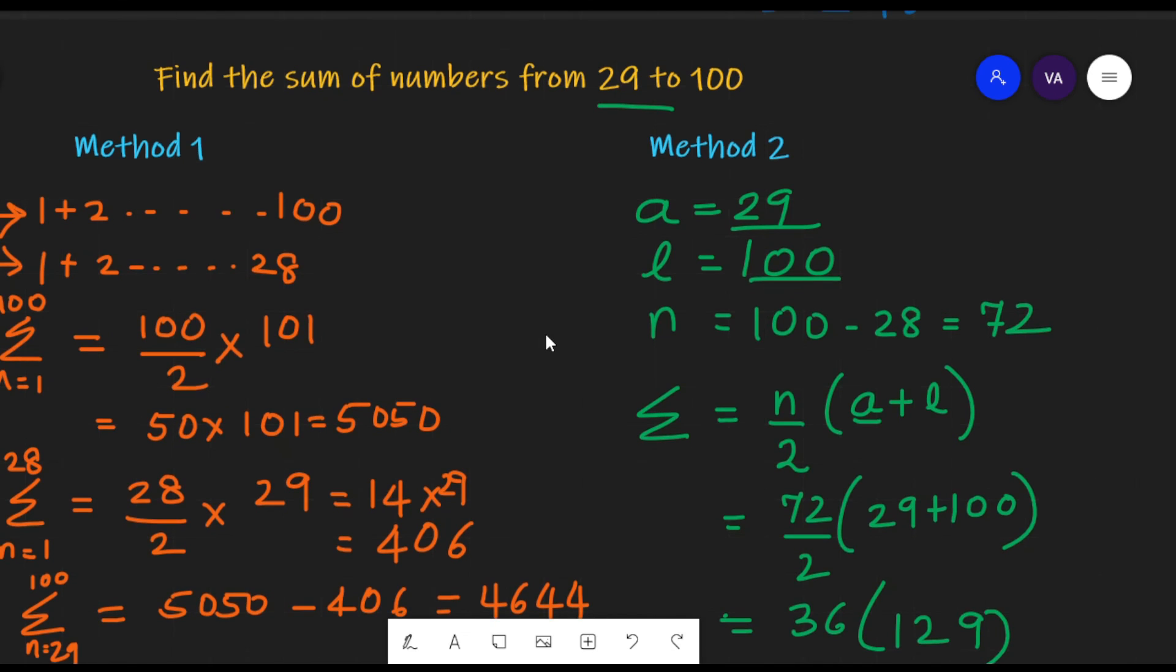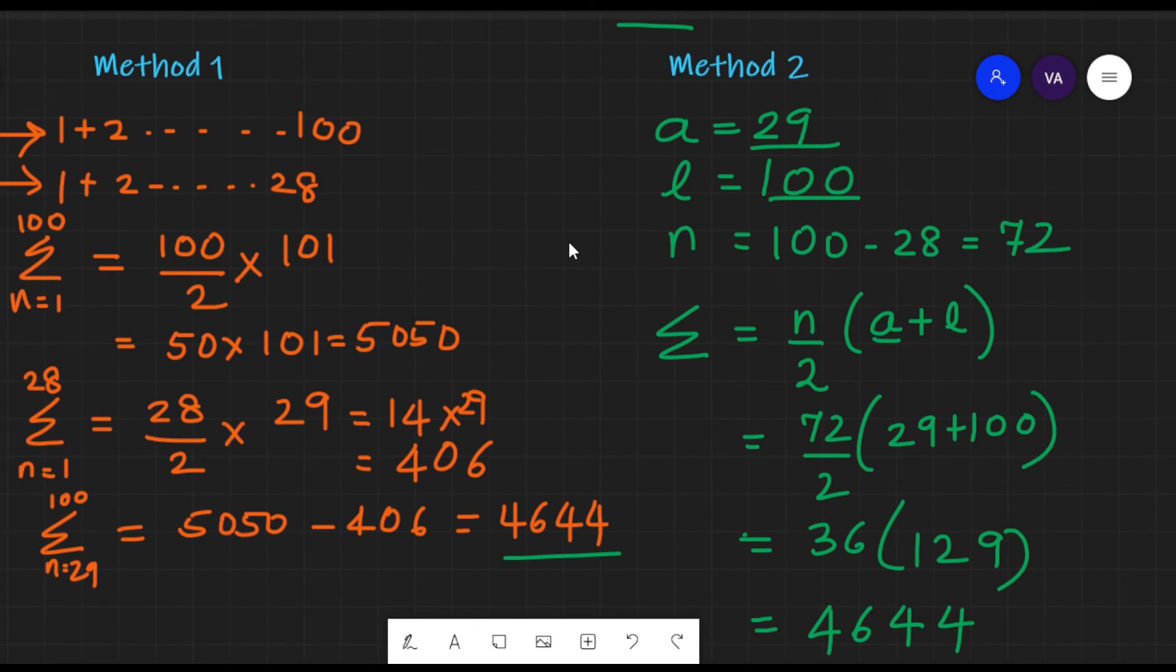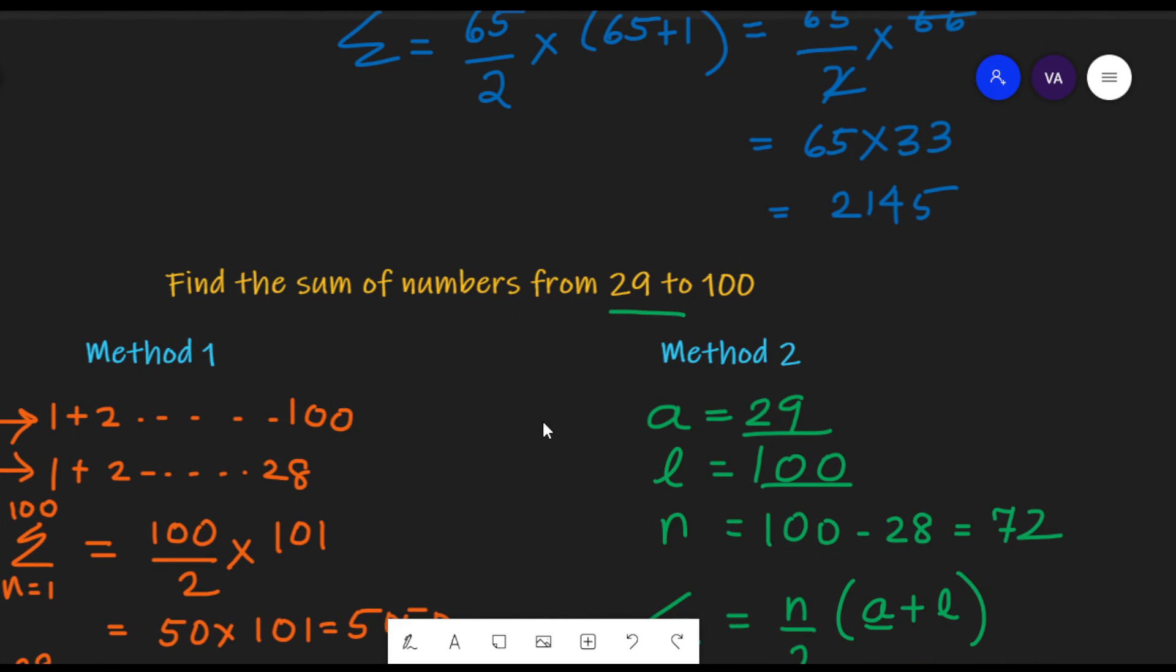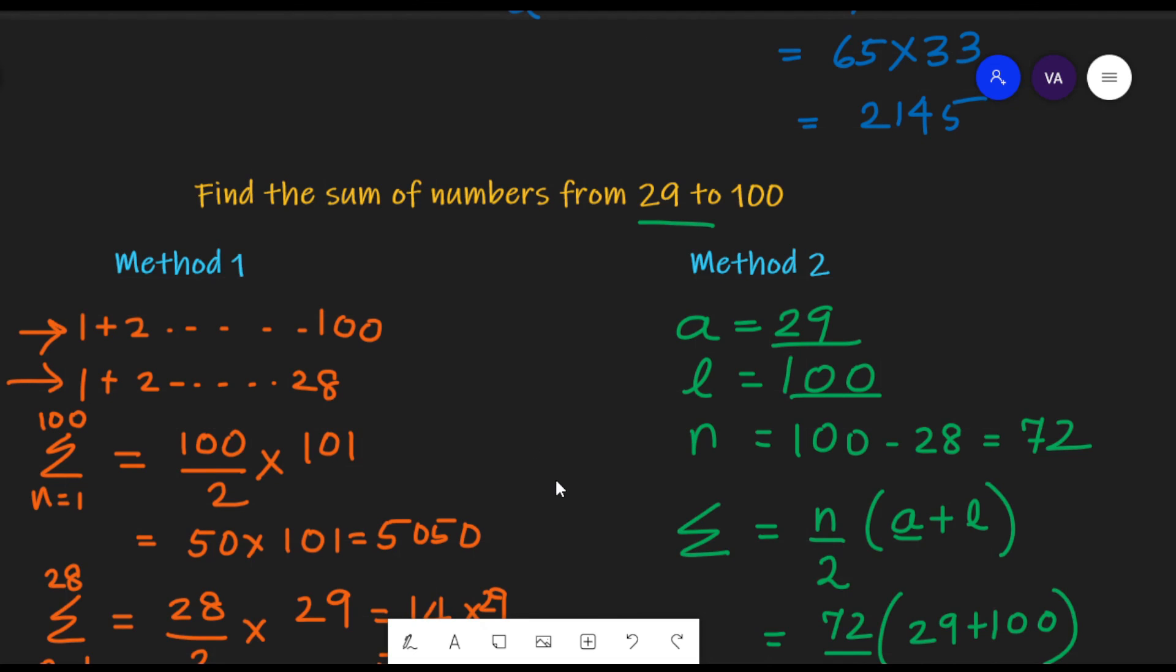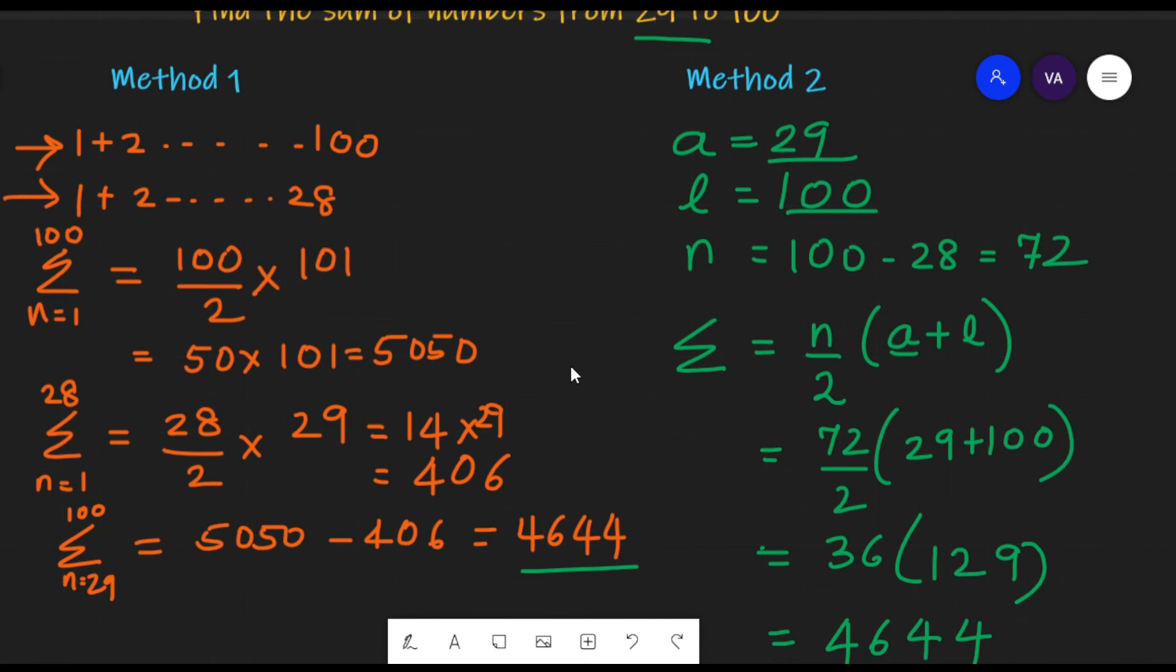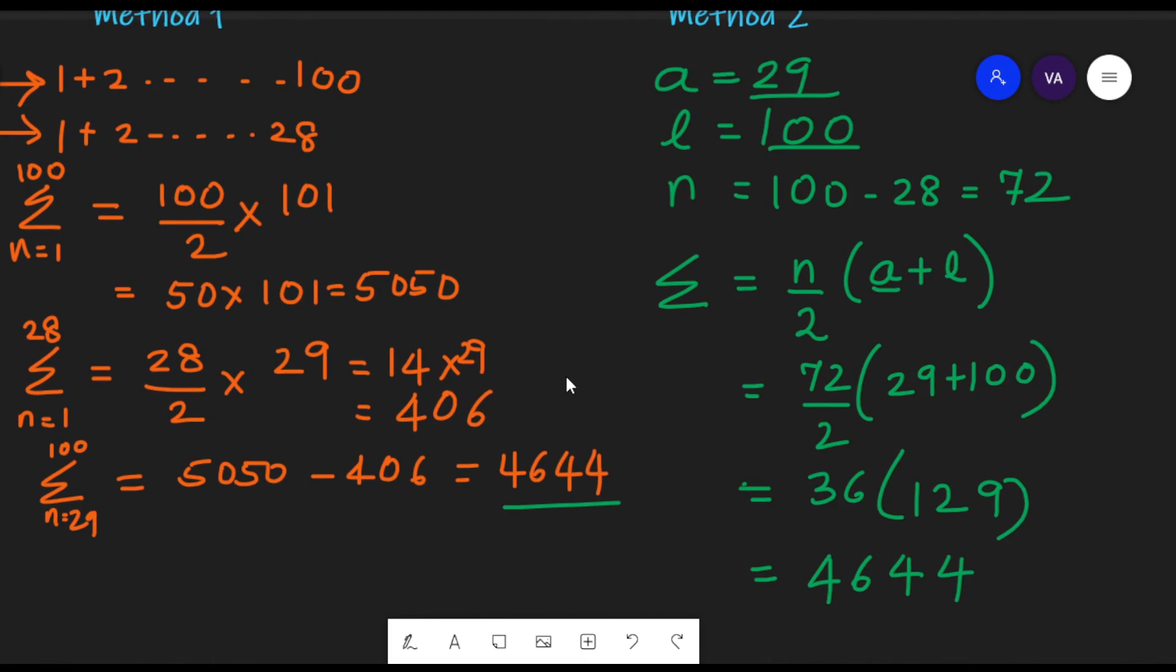So this is how we can find the sum of consecutive natural numbers, either if they are starting from 1 or from anywhere in between. Hope you have understood this concept, and if you like this video, do not forget to subscribe and like my channel. Thank you so much. Keep watching.